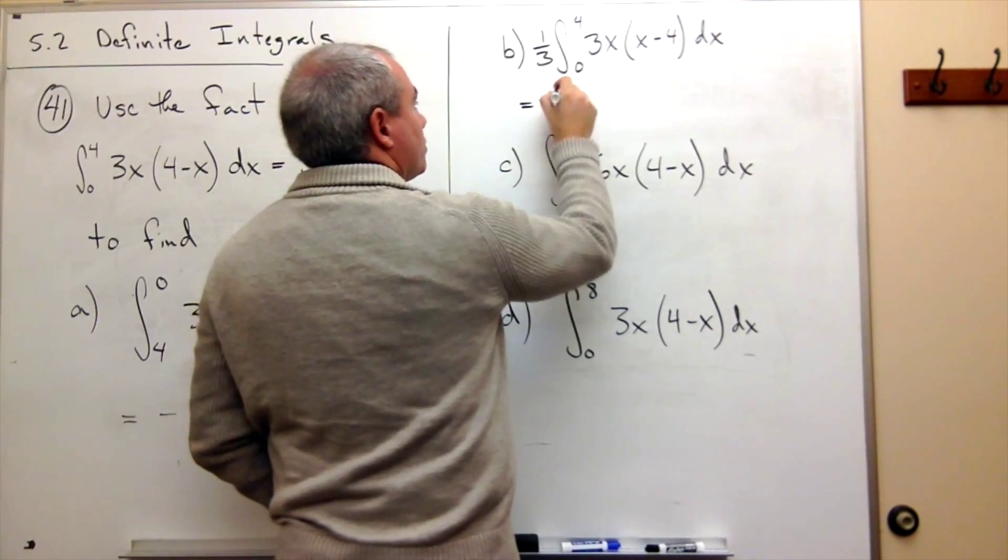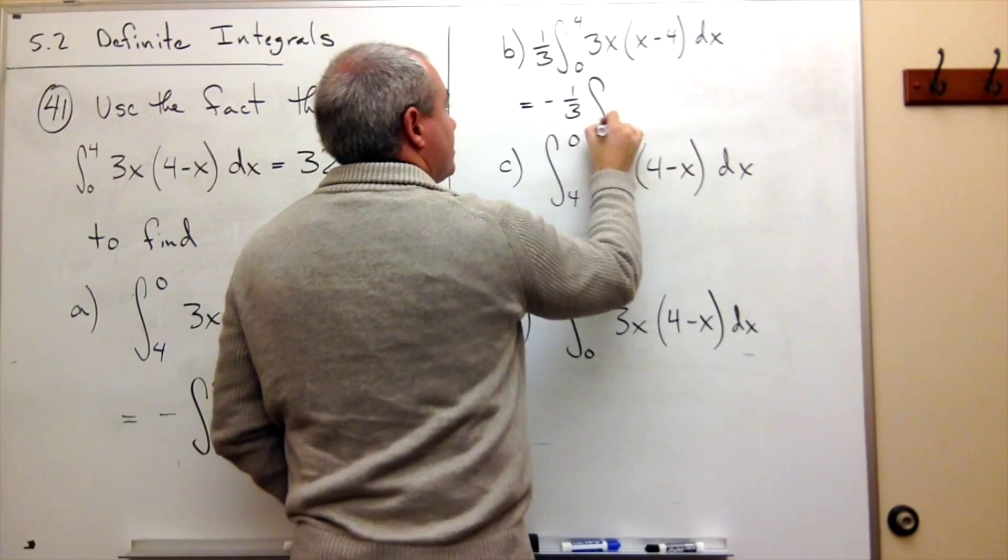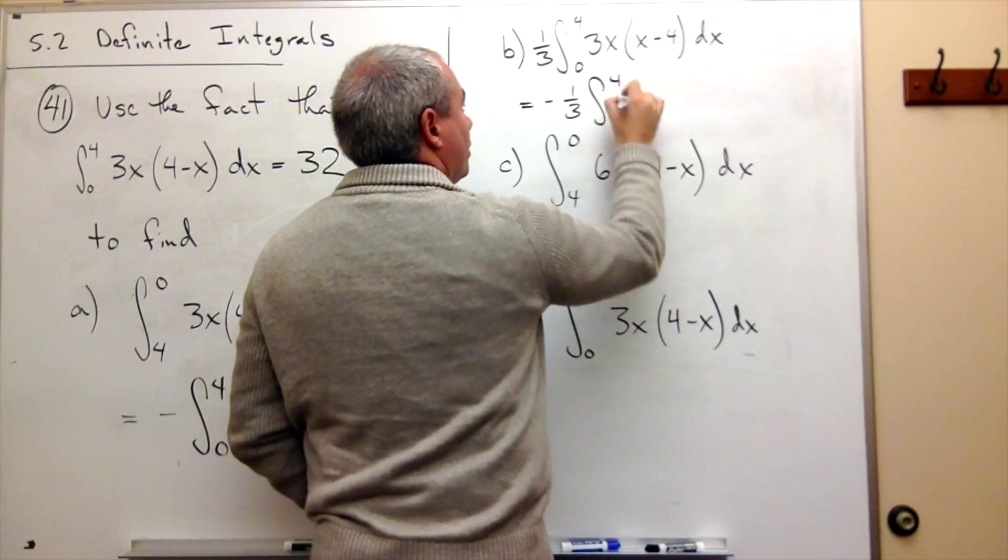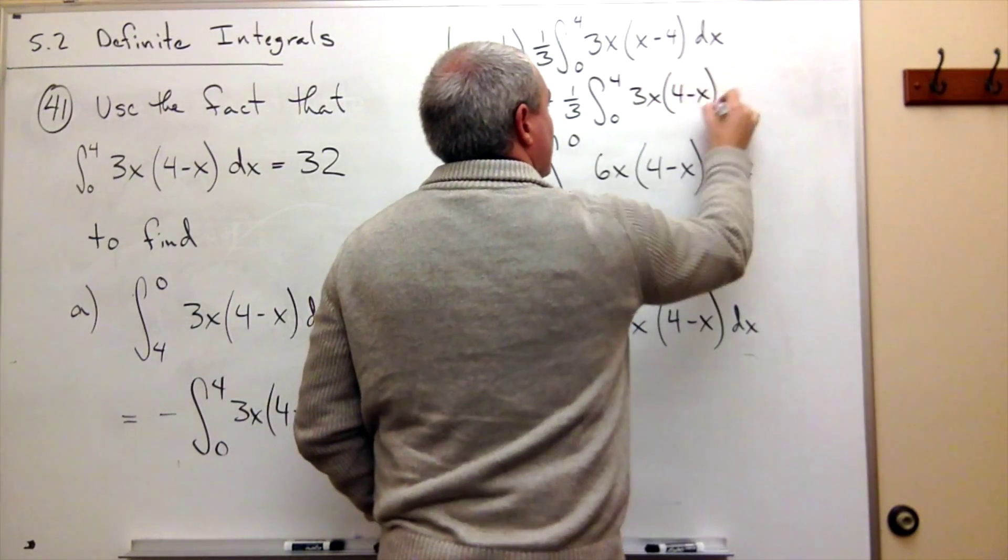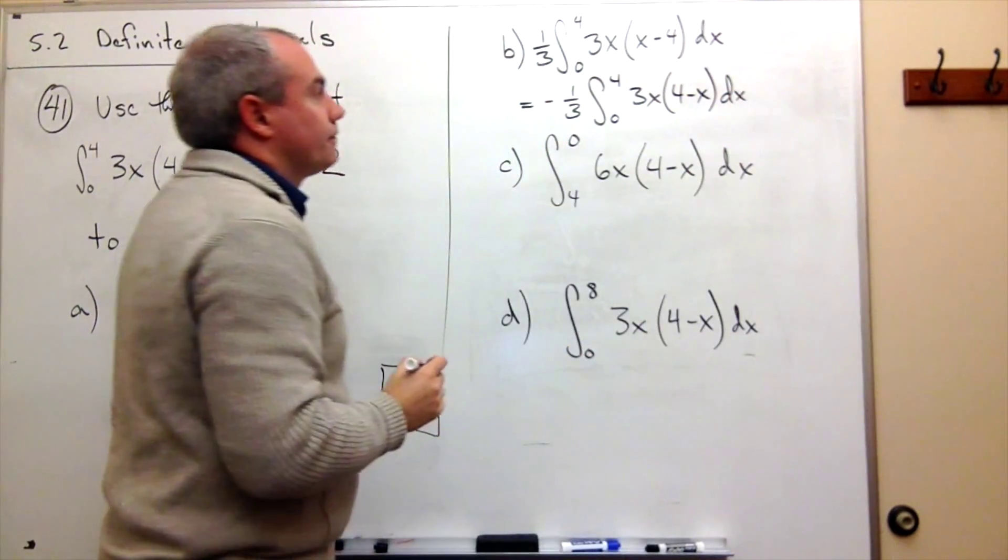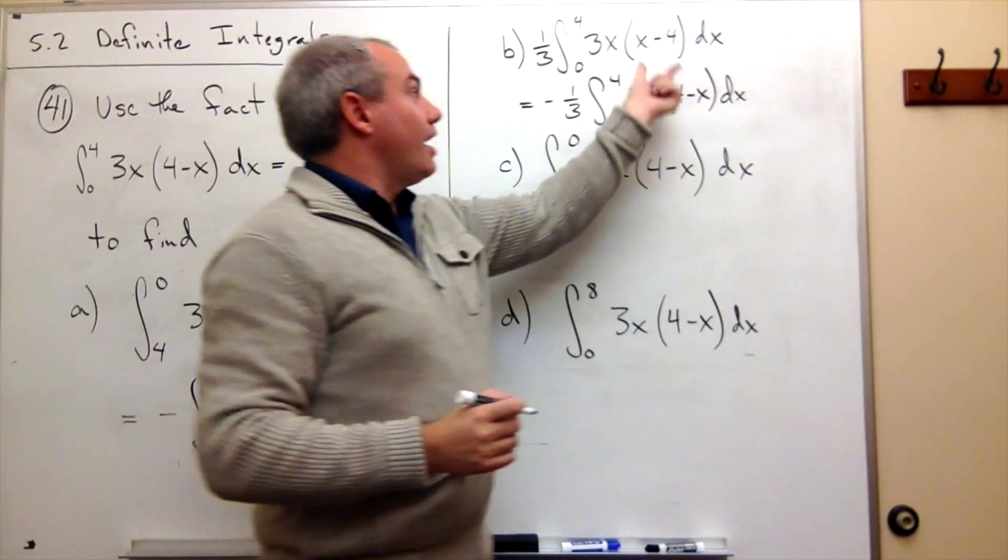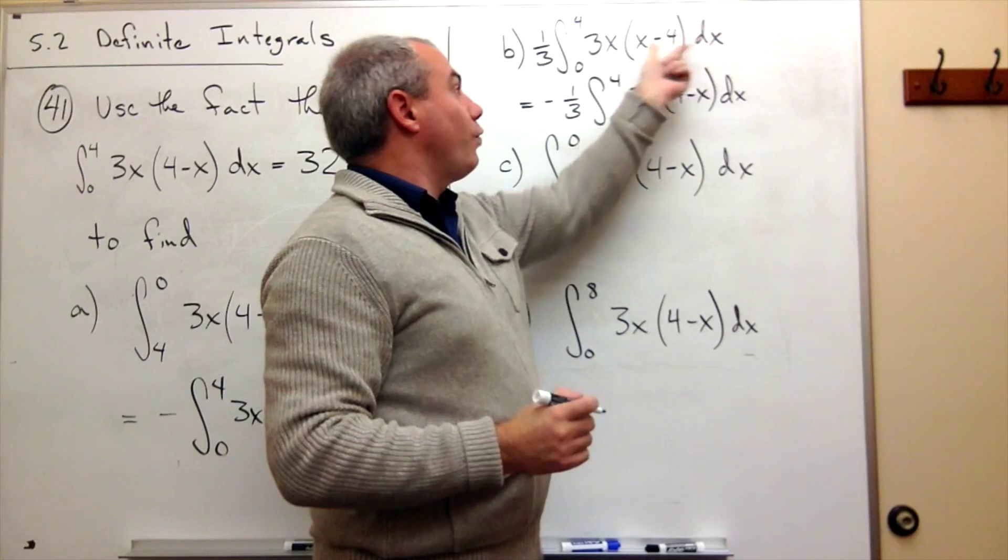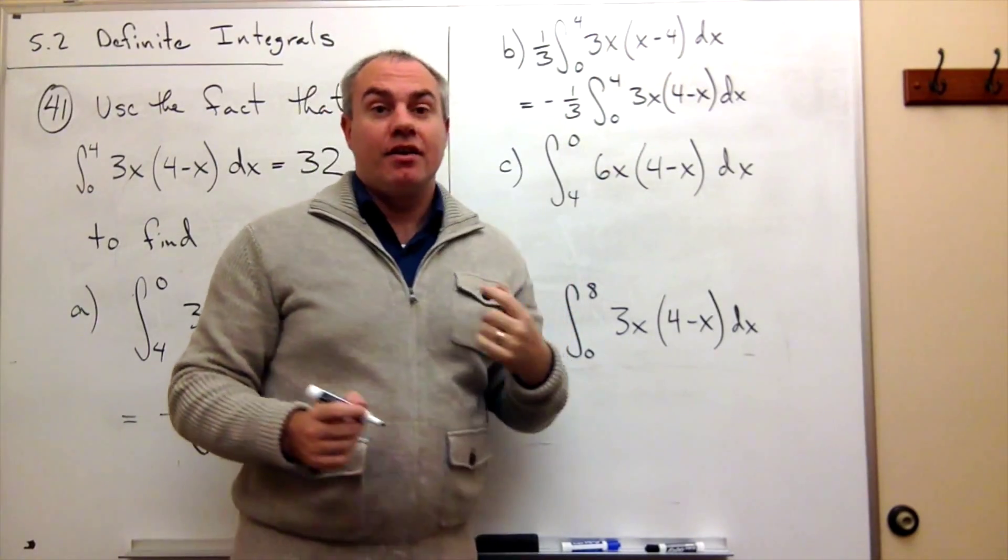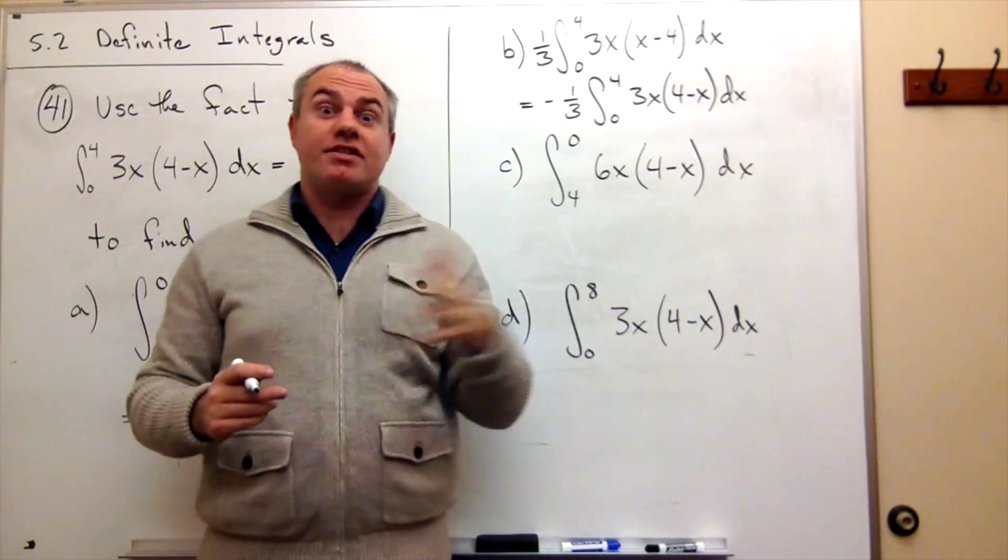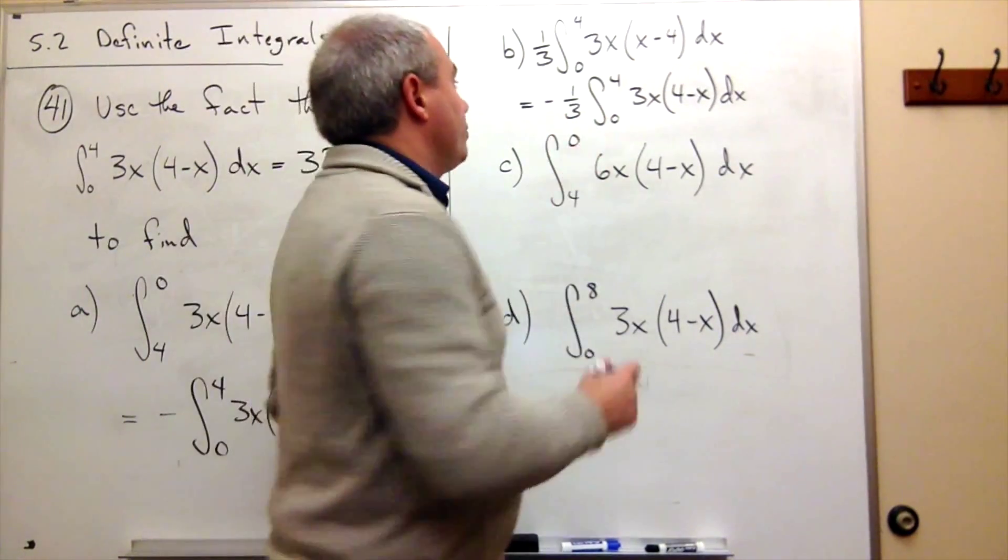And I can rewrite this as negative 1 third times the integral from 0 to 4 of 3x times 4 minus x dx. I factor out this negative from x minus 4. And I move that negative all the way to the outside because constants can move through integration signs.